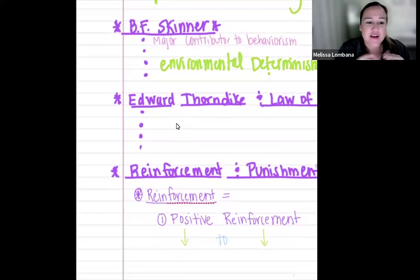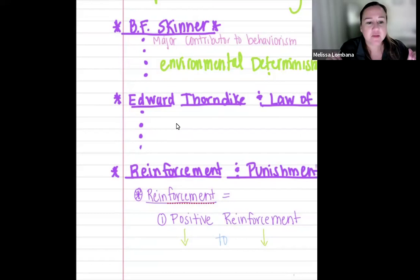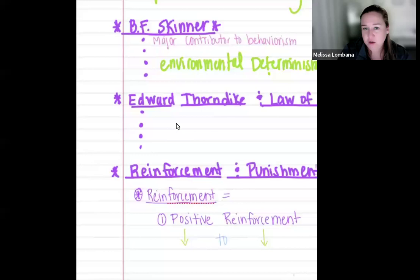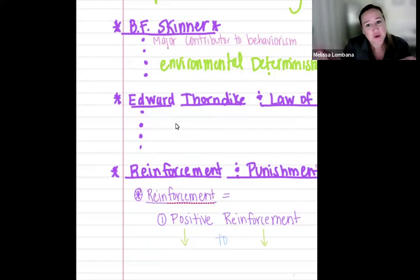Thorndike and Skinner were big on cages and animals. He created an experiment to test out these laws of learning — he designed what's called a puzzle box, which was basically a cage with a lever inside to open the door. He had a cat, and on the outside of the box was a fish. He wanted to see if the consequence of a fish would cause the cat to pull the lever quicker. Through trial and error — that's kind of how we learn — we do something, see the consequence, and if we like it, we do it again.